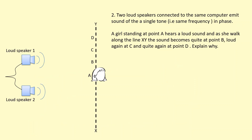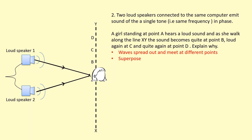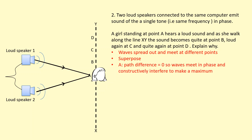Two loudspeakers are connected to the same computer, emitting sound waves of a single tone — meaning the same frequency — and emitting in phase. A girl standing at point A hears a loud sound. As she walks along line XY, the sound becomes quiet at B, loud again at C, then quiet again at D. At point A, both waves travel the same distance, so the path difference is zero. Because they left in phase, they arrive in phase and constructively interfere to produce a maximum — that's why she hears a loud sound.